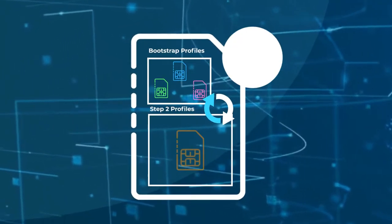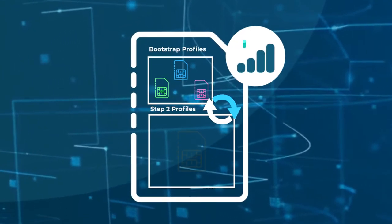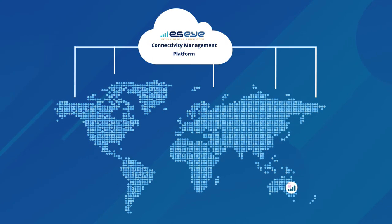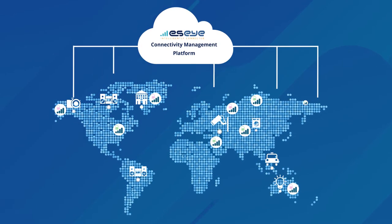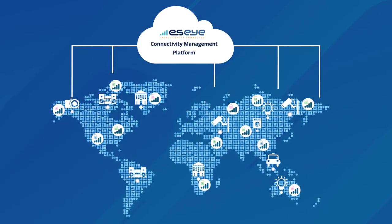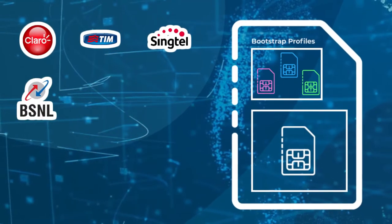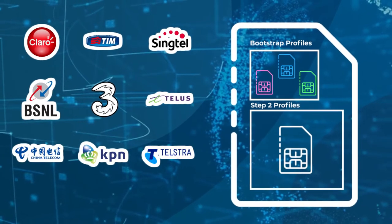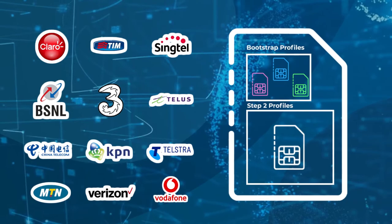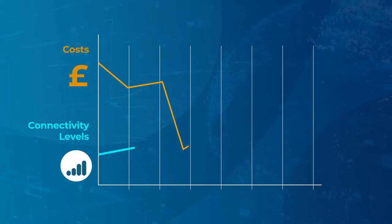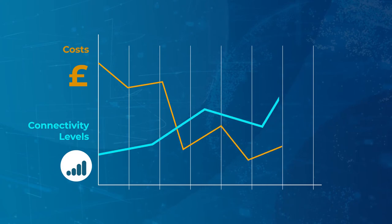Using the connectivity management platform, we can push more profiles over the air should a better network become available. This allows simple mass switching post-deployment and provides you with maximum flexibility and a future-proof solution. Using intelligent algorithms, the AnyNet Plus SIM delivers near 100% device connectivity out of the box, regardless of location. Pushing new network profiles over the air also allows you to localize each device to a local mobile network as its primary default profile, whilst maintaining the bootstrap profiles. This reduces costs and increases connectivity levels.